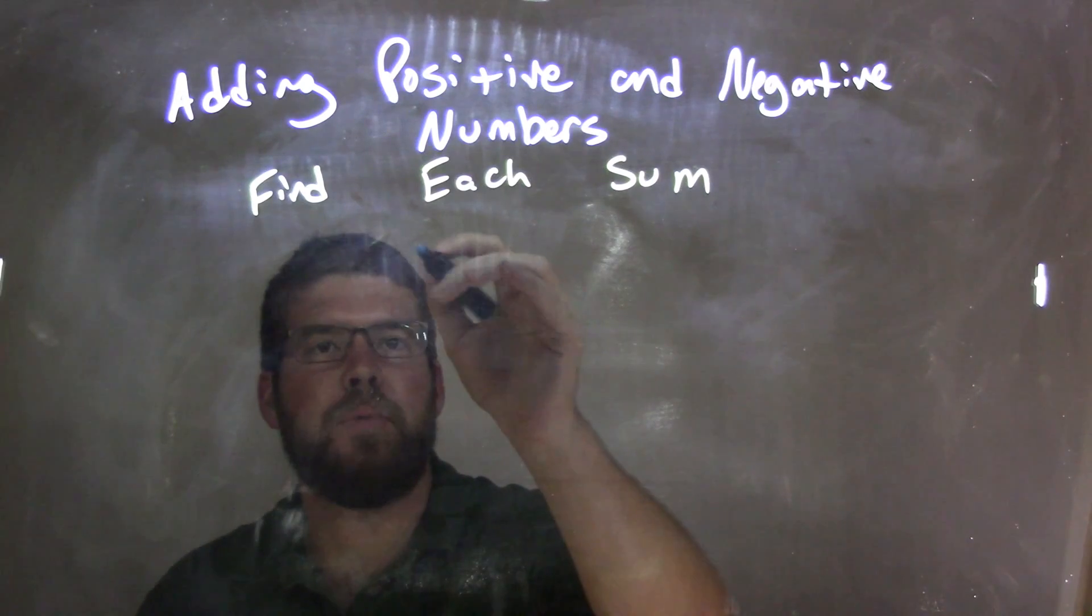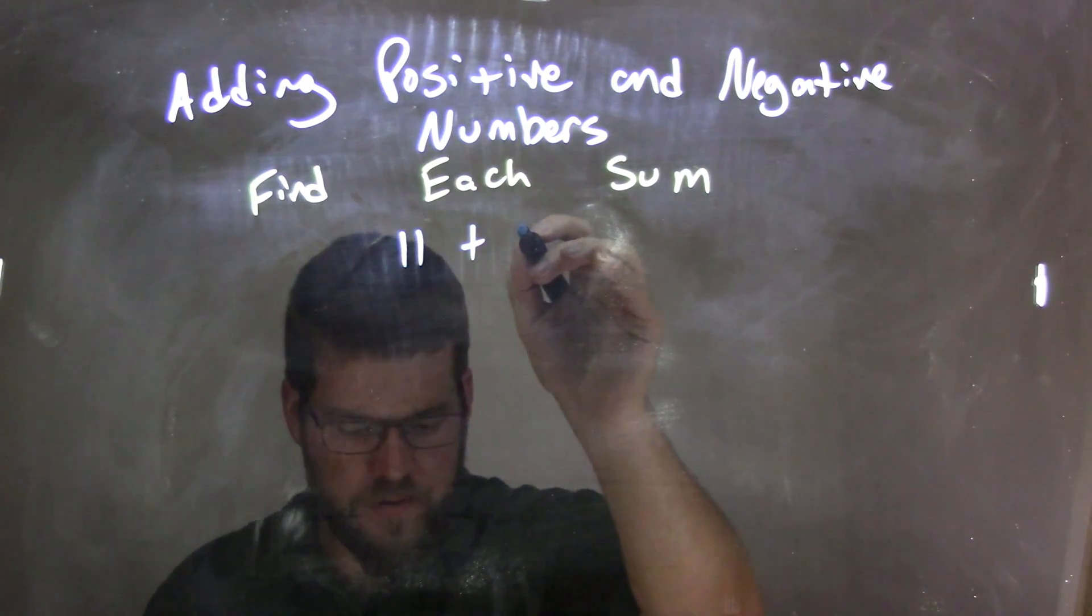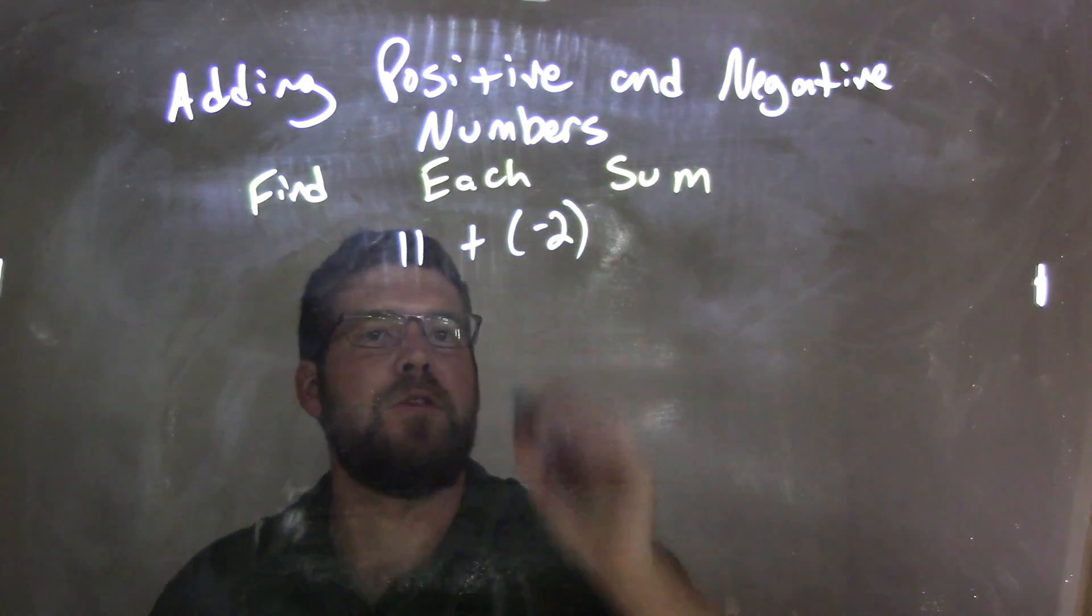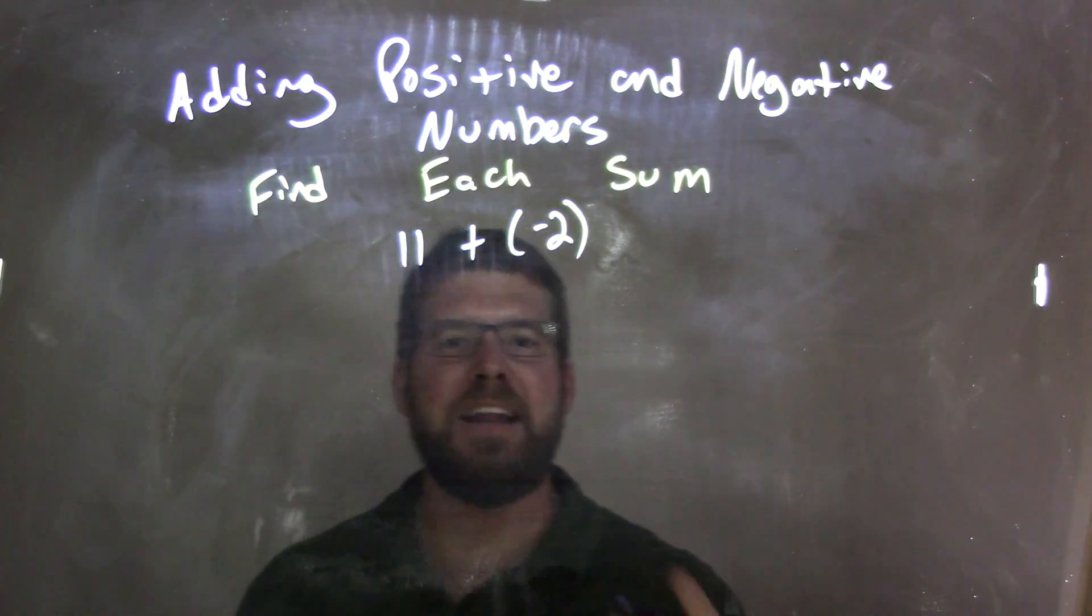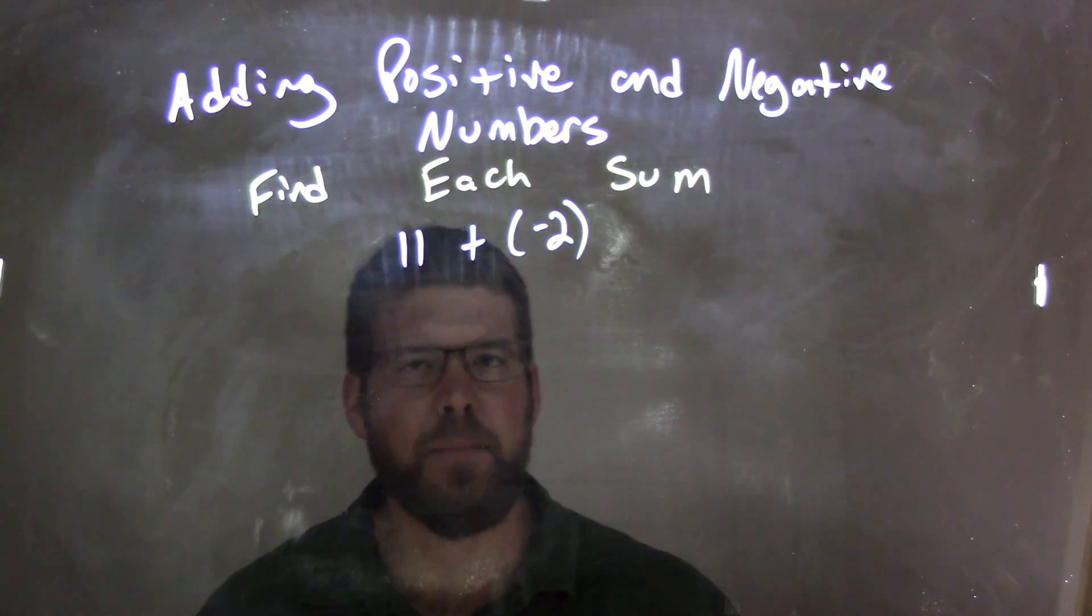So if I was given this expression 11 plus a negative 2, we start with 11 and we want to add a negative 2. This one's fairly simple.